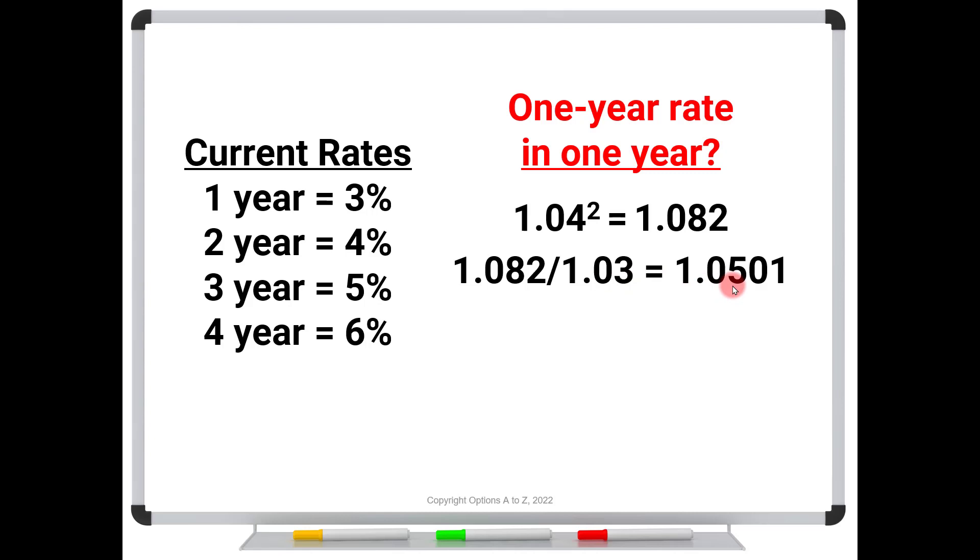But what I can do is I can take this number and divide it by the one-year rate. So let's take this 1.082 divided by 1.03 comes to just a touch over 1.05. And what that is telling you is that in one year, the market is expecting this rate to be 5%. Well, how do we know that? Well, again, you could just take the one-year rate at 1.03. And when that matures, you could renew it at the implied rate of 1.05. And look at that. It's going to give you 1.082 exactly the same as getting the 4% rate for two years.